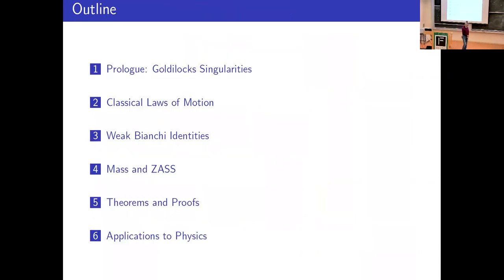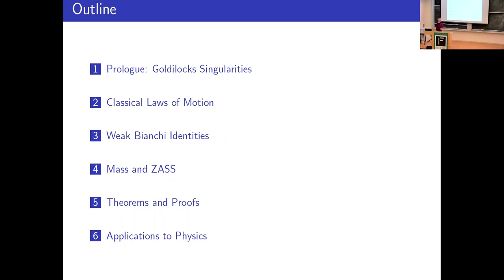Here is an outline of my talk. I will talk about Goldilocks singularities and define what I mean by that. I will review the classical laws of motion of particles — today I will only be talking about classical physics. I will introduce the notion of weak Bianchi identity, recall Bray's definition of mass for zero-area singularities of Riemannian manifolds, state theorems with proof outlines, and conclude with applications of these results in physics.